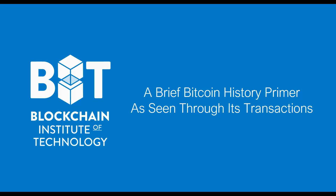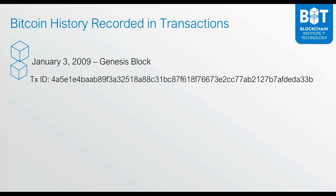I'd like to take the opportunity to go back to some very special moments in the history of Bitcoin which are captured forever, permanently and immutably on the Bitcoin blockchain. Starting with January 3rd, 2009 — the genesis block. That was when Satoshi Nakamoto mined the first Bitcoin block ever. Here is the transaction ID for the genesis block, and we will now go to a block explorer to review that transaction.